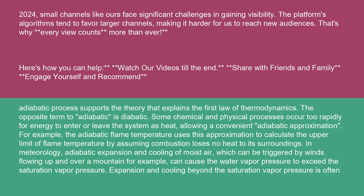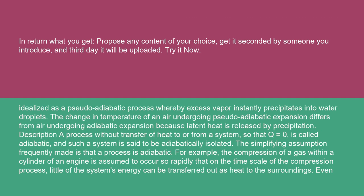In meteorology, adiabatic expansion and cooling of moist air — which can be triggered by winds flowing up and over a mountain, for example — can cause the water vapor pressure to exceed the saturation vapor pressure. Expansion and cooling beyond the saturation vapor pressure is often idealized as a pseudo-adiabatic process whereby excess vapor instantly precipitates into water droplets. The change in temperature of air undergoing pseudo-adiabatic expansion differs from air undergoing adiabatic expansion because latent heat is released by precipitation.